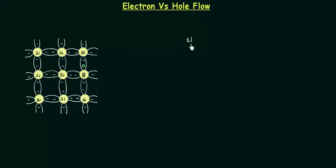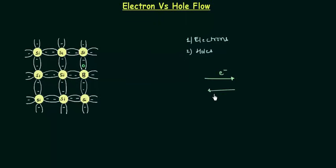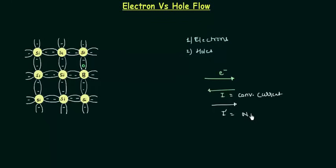We have two types of charge carriers: electrons and holes. The direction of current is opposite to the direction of flow of electrons. If the electron is flowing from left to right, then the current will be from right to left. This is called conventional current. The natural current, let's call it I', has the same direction as the flow of electrons, that is from left to right.